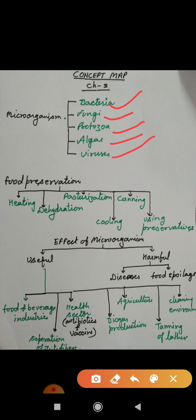The next topic is food preservation. Food preservation can be done by: heating, dehydration, pasteurization, canning, cooling, and using preservatives. The preservatives include sodium benzoate, sodium metabisulphite, common salt, vinegar, oil, etc., which can be added for preservation.